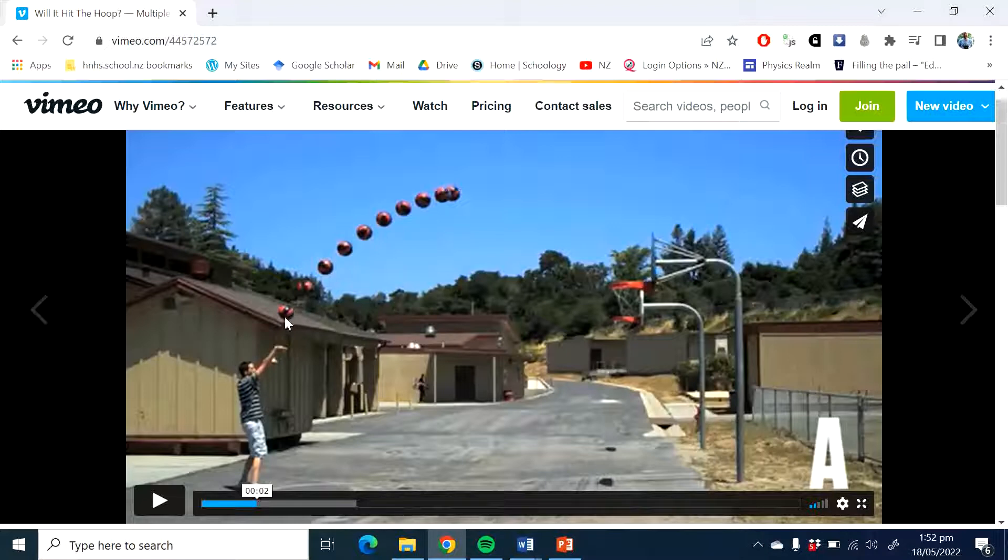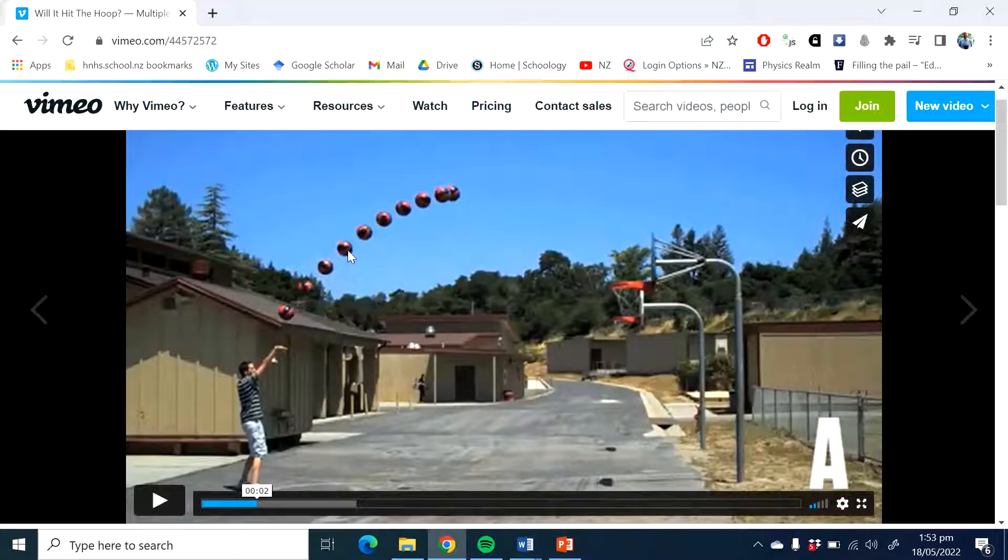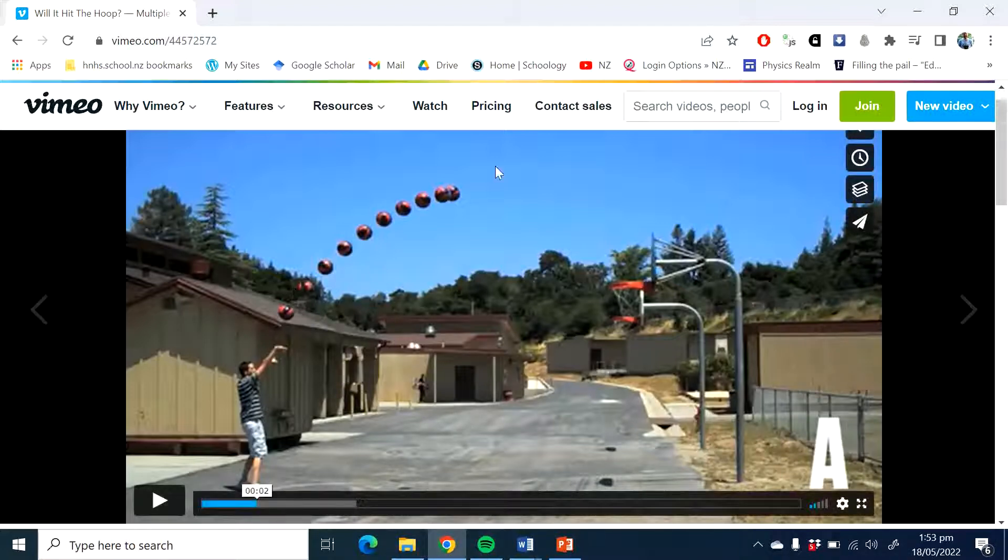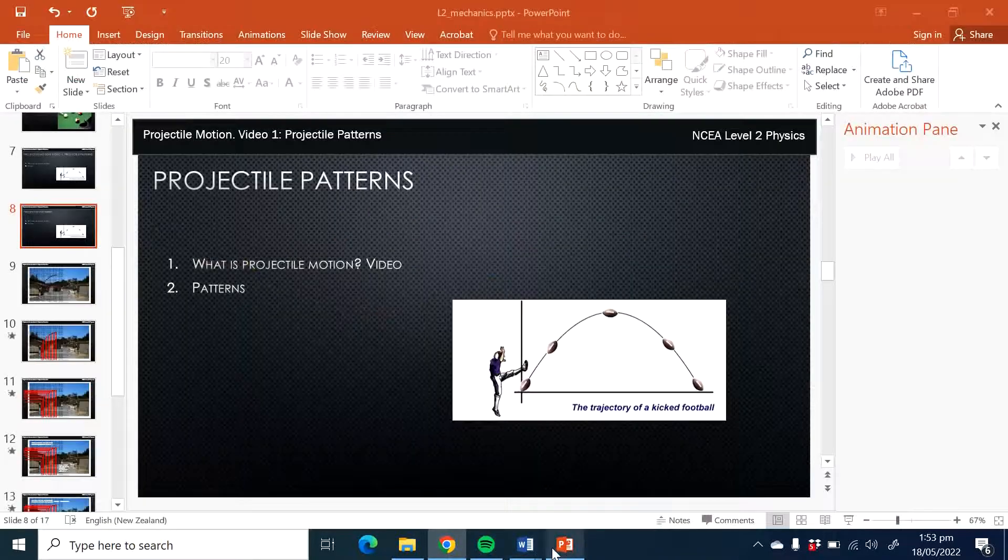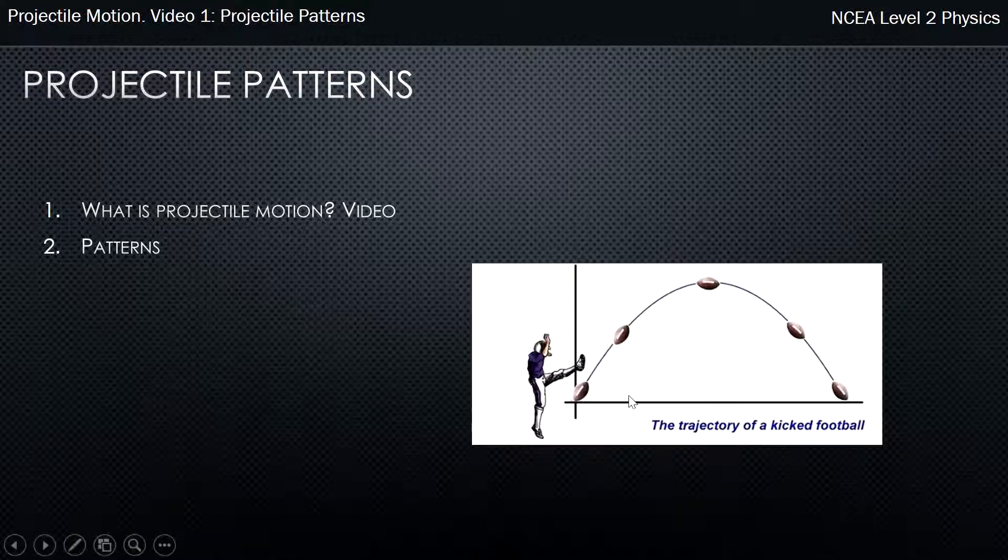So this is an example of a projectile. A projectile is something thrown, something that rolls off a cliff, something that has some sort of sideways movement, but also gravity is trying to pull it down as well. A rocket would not be considered a projectile because it's got a sideways force forcing it to speed up in that direction. So projectiles: basketball throws, we had someone kicking a football here, also considered projectile motion.